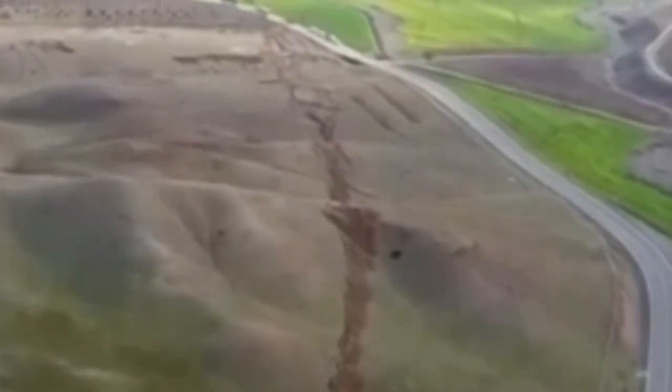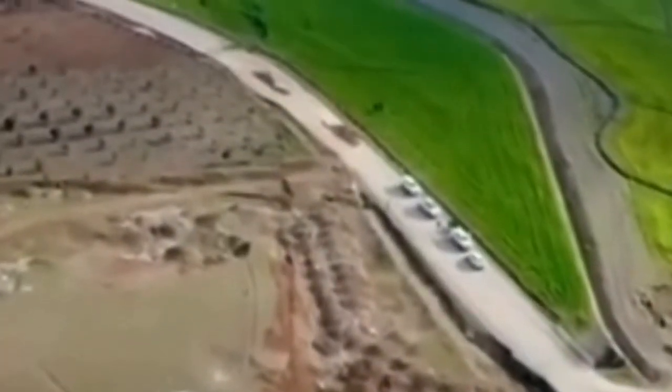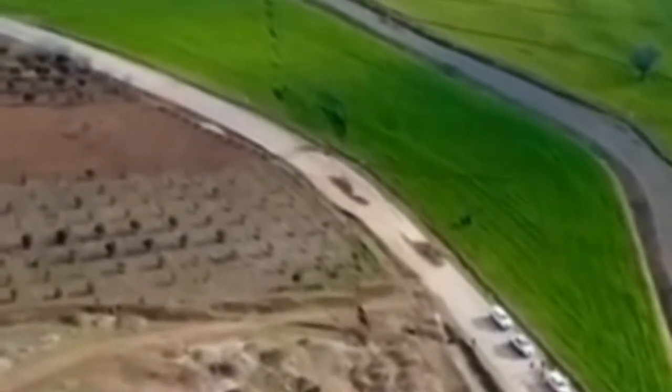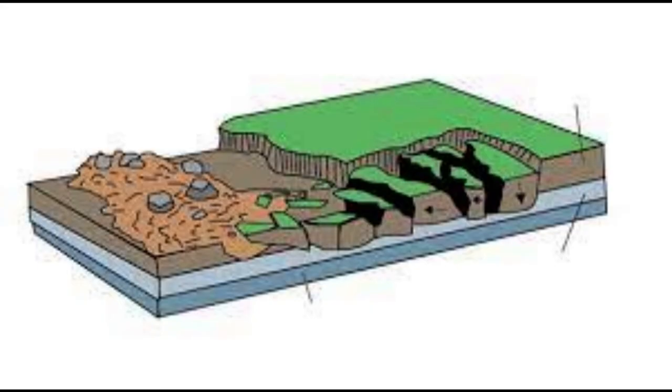The lateral spreading can cause significant damage to buildings, roads, and other structures as the ground shifts beneath them. It can also result in the loss of soil, vegetation, and habitat, leading to environmental damage. To mitigate the potential damage from lateral spread landslides, it is important to identify areas prone to slope instability and to implement appropriate engineering measures such as slope stabilization, drainage systems, and reinforcement of structures. Monitoring the ground conditions, including changes in slope angle and soil moisture, can also help detect early signs of movement and allow for timely intervention.